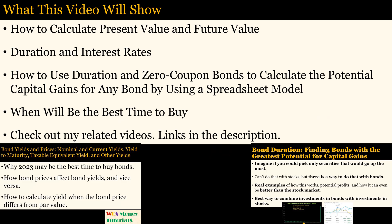This video will start out by laying the foundation and the logic for my spreadsheet model that calculates potential capital gains. The foundation will indicate how to calculate present value and future value and how the prices of bonds are determined. It will discuss the relationship between duration and interest rates and how to use duration and zero coupon bonds to calculate the potential capital gains for any bond using a spreadsheet model. I will also discuss how to ascertain when it will be the best time to buy. The beauty of using duration with bonds is that the potential capital gains can easily be calculated, something which is impossible to do for stocks.